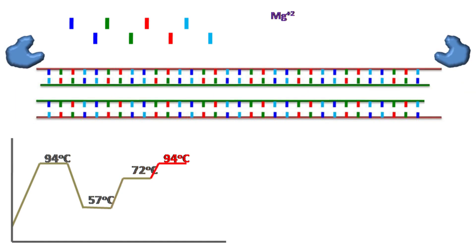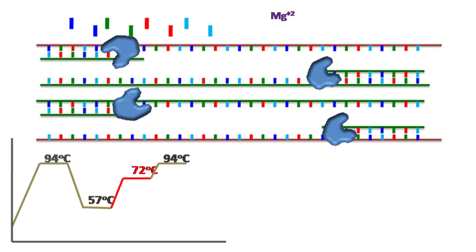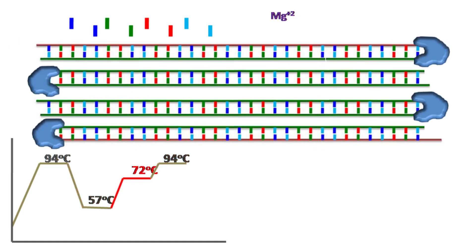These cycles are repeated several times in order to obtain millions of copies of the target DNA.